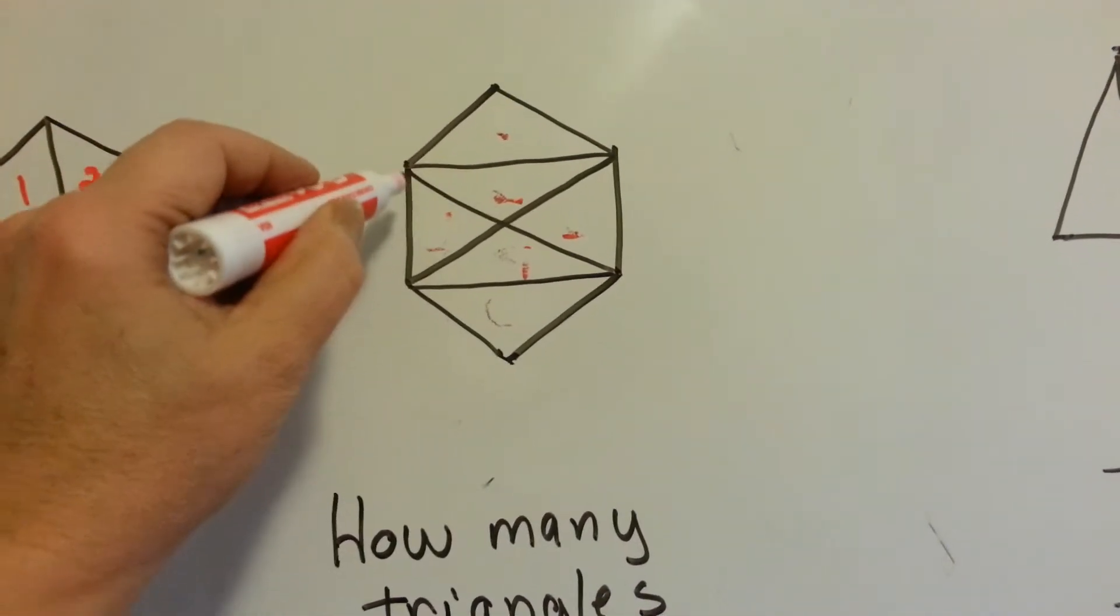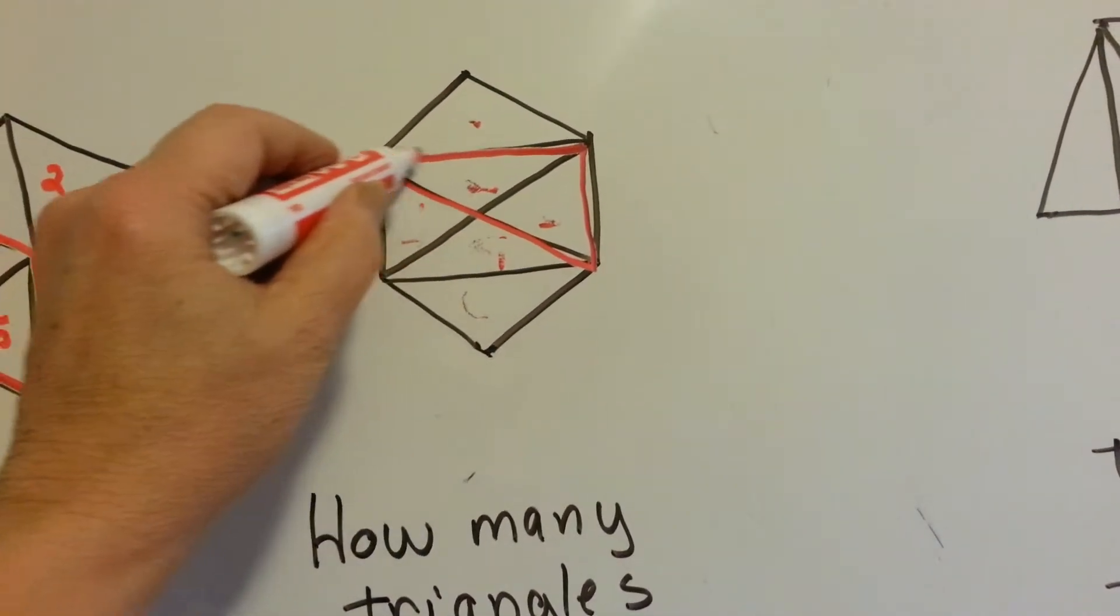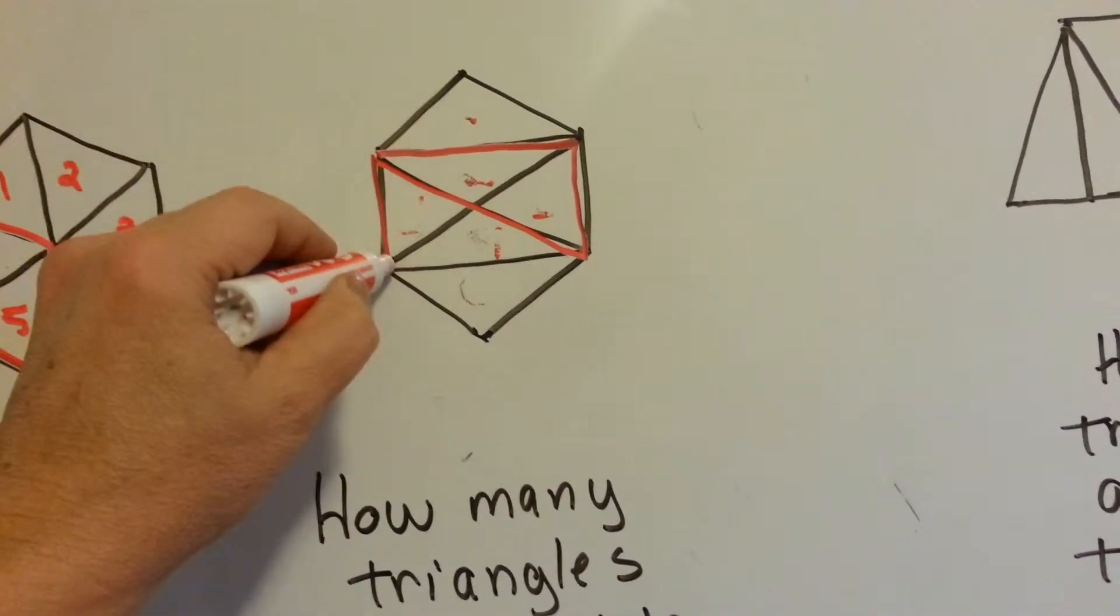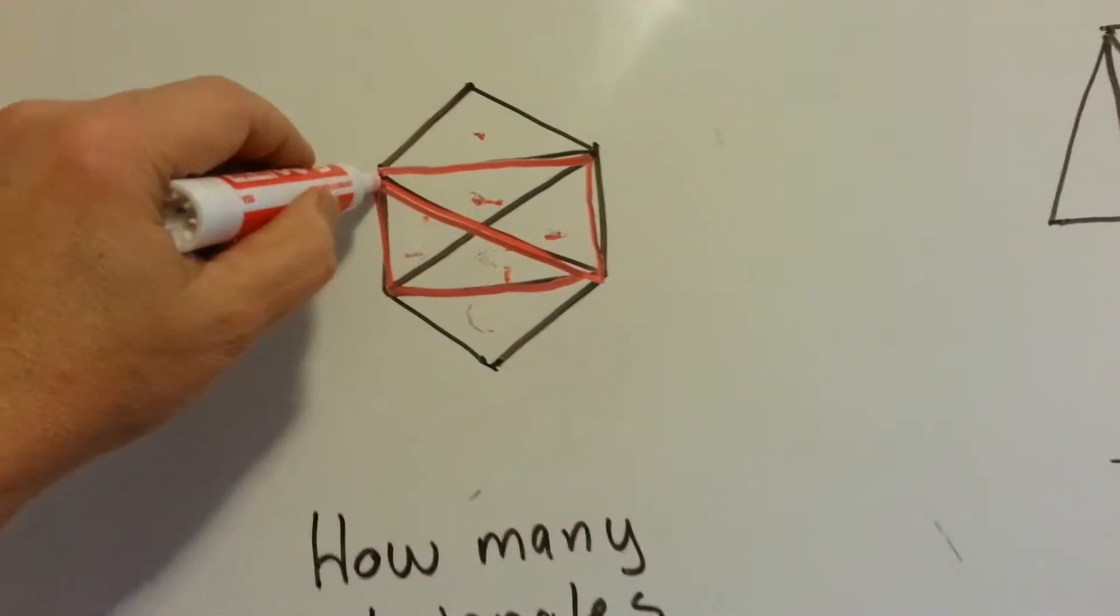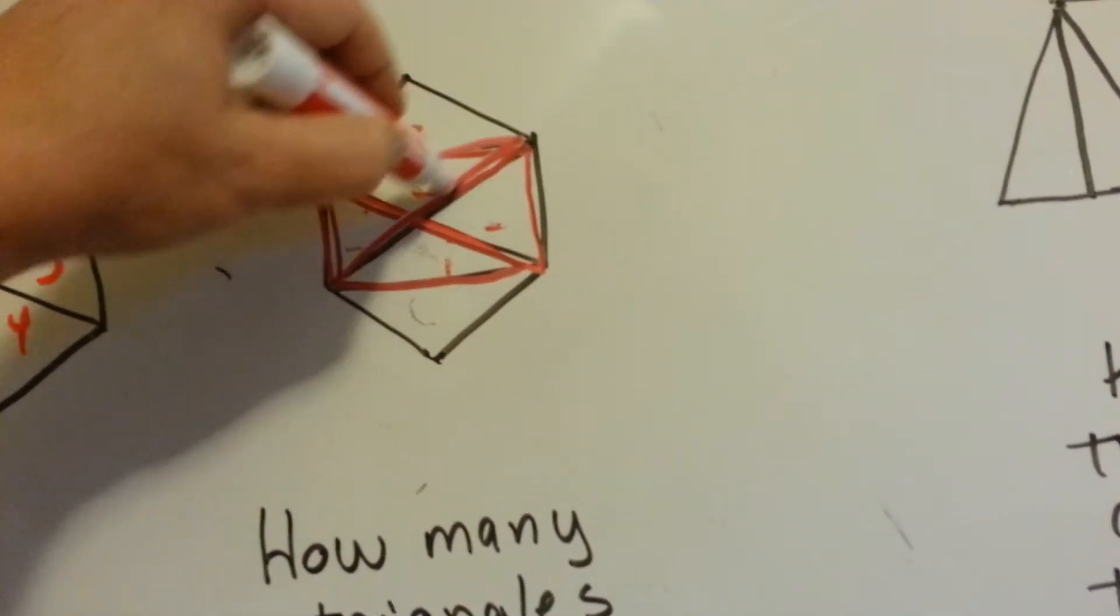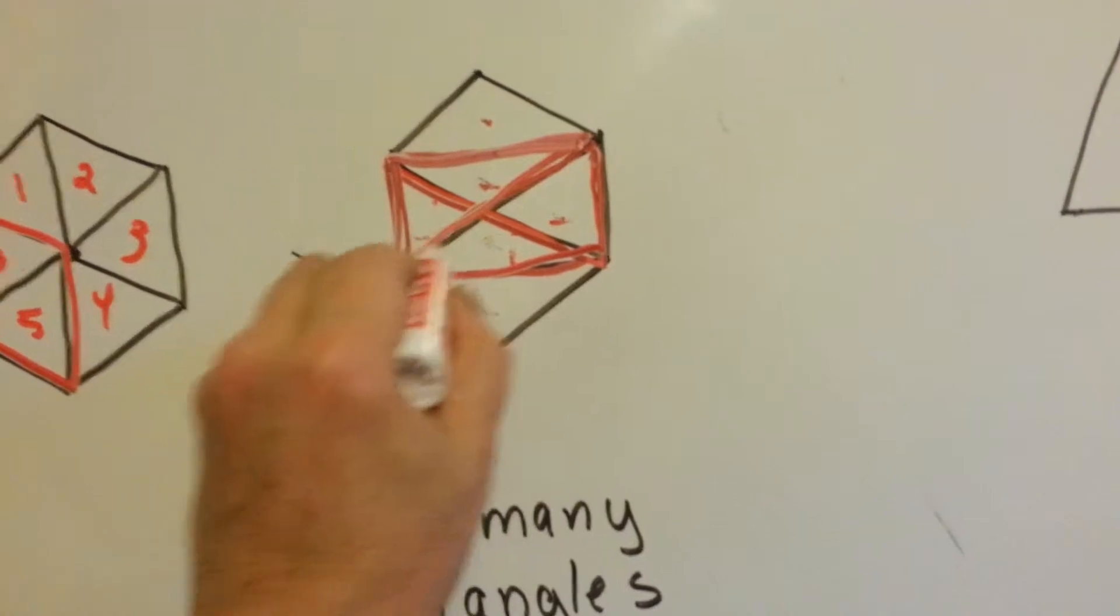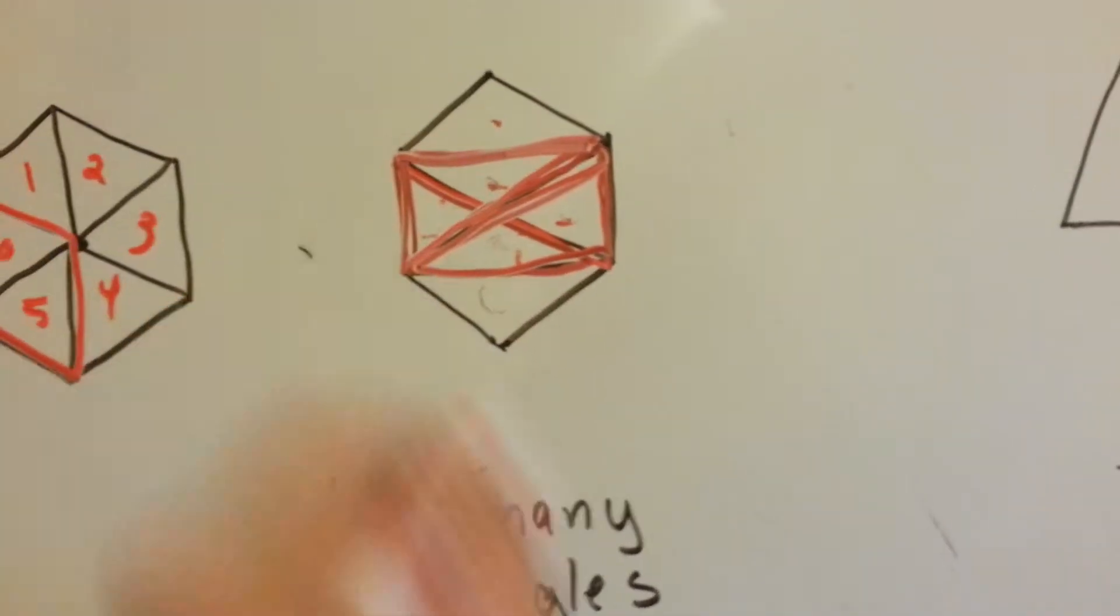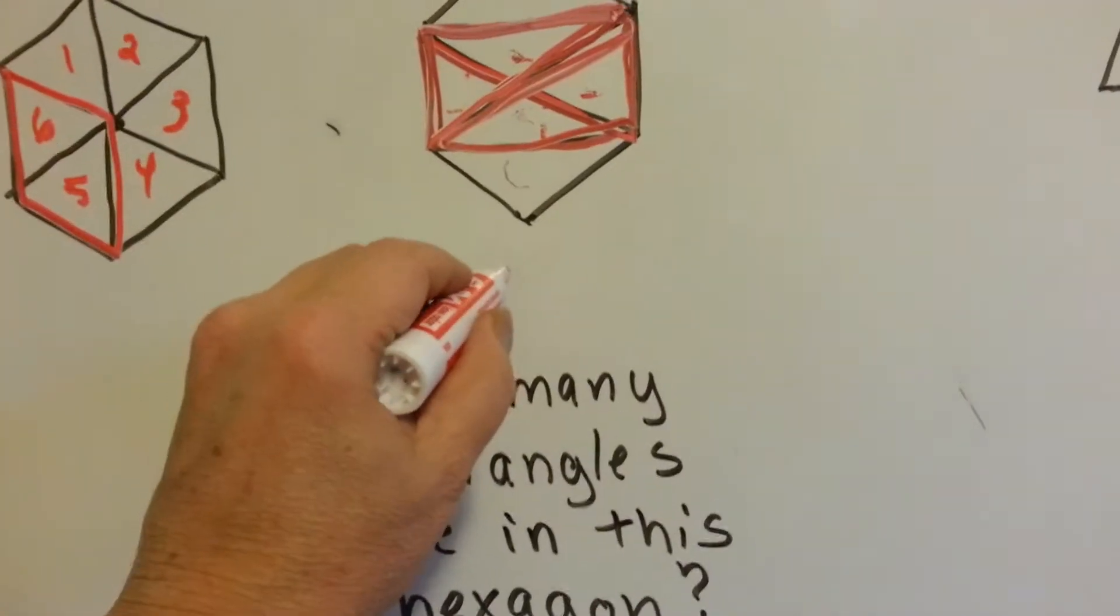Do you see this triangle here? That's seven. And there's the other one here, that's eight. And if we go this way, that's nine, right here. And if we go this way, that's ten. So actually, there's ten triangles hidden in this one.